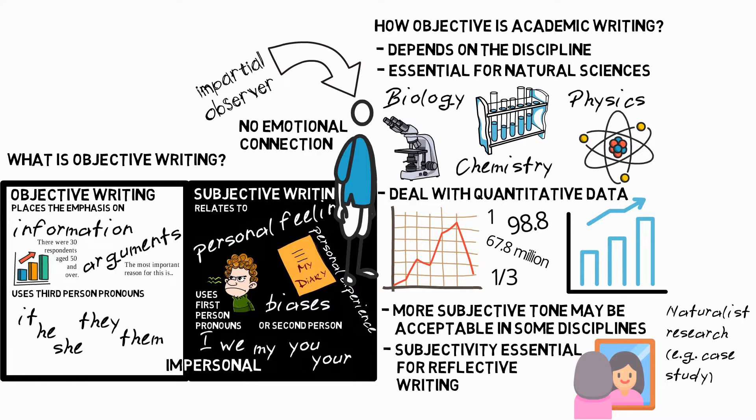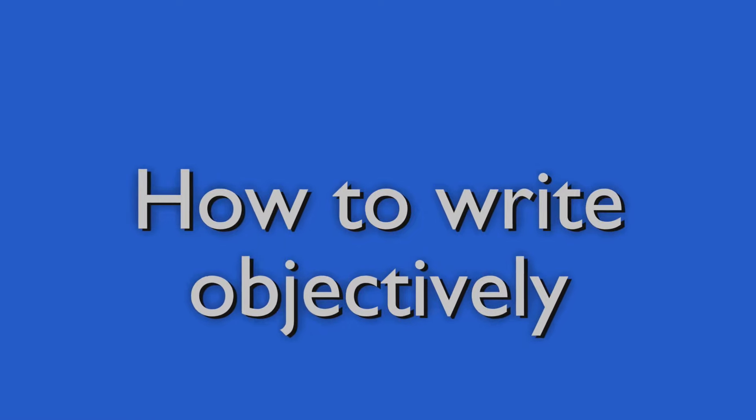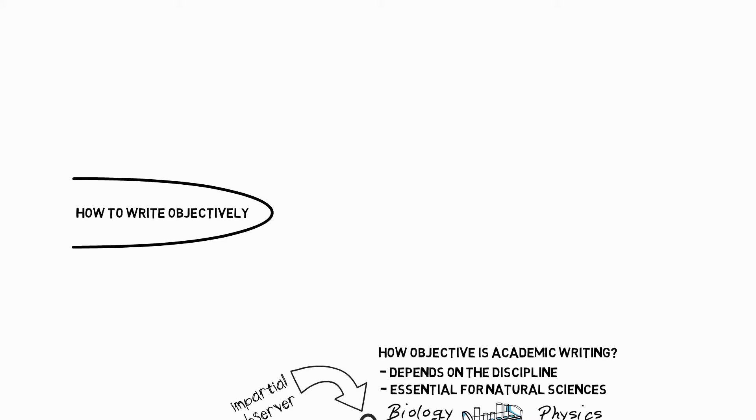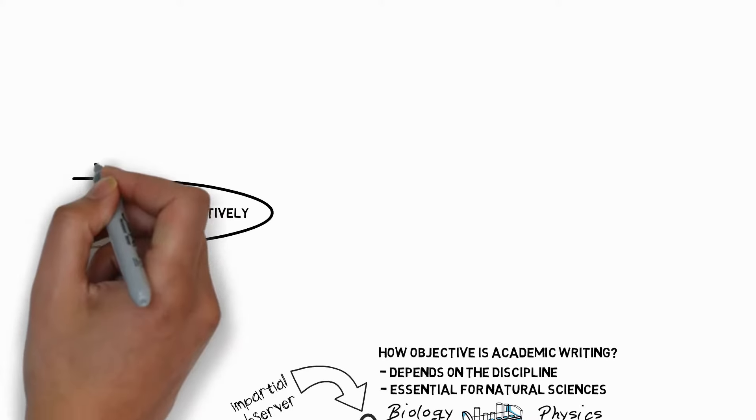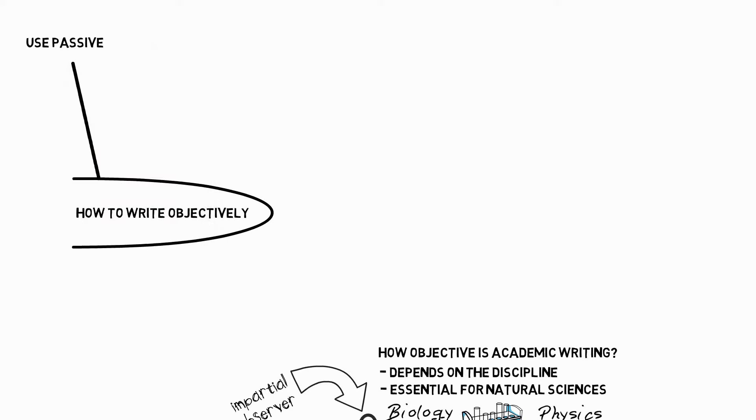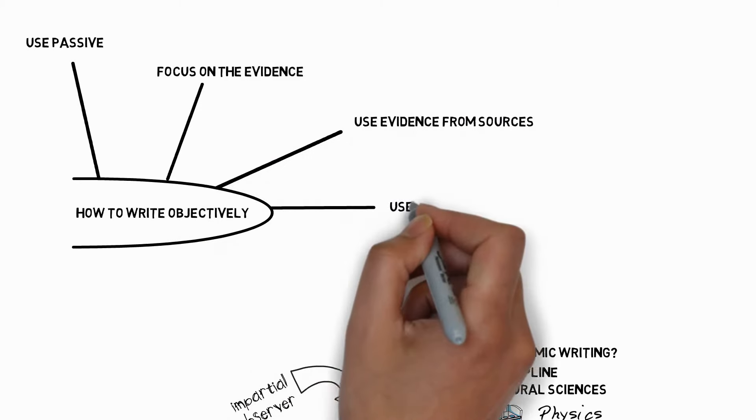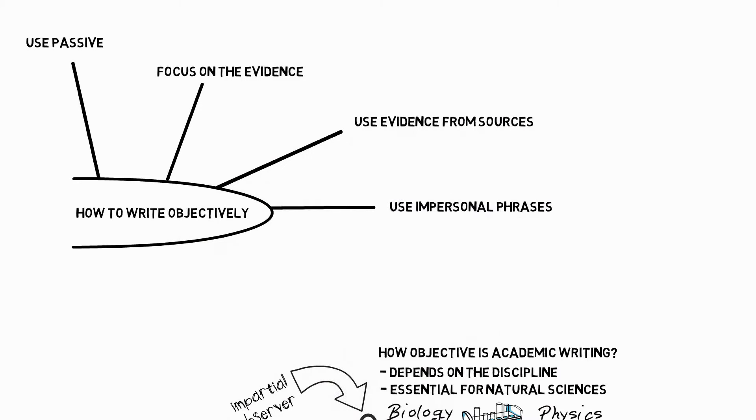Finally, let's take a look at how to write objectively. There are five different ideas we'll consider here. First, use passive voice. Second, focus on the evidence. Third, use evidence from sources. Fourth, use impersonal phrases. And finally, personify the writing.